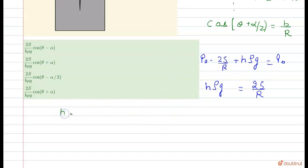So h is equals to 2s divided by rho g r. Now we can put the value of 1 by r over there. And h is equals to 2s divided by rho g b into...